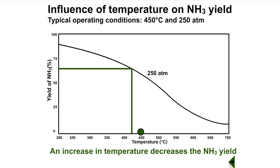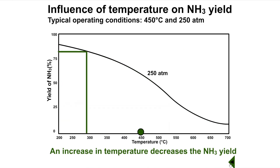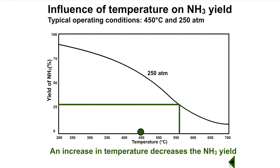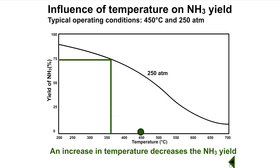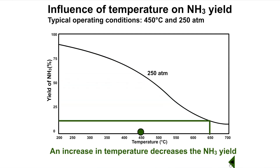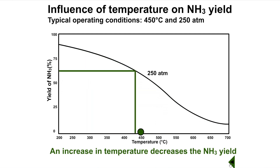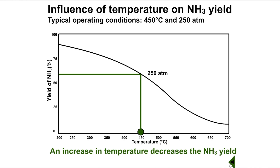In the Haber process, we want to get a high ammonia yield. We want the dynamic equilibrium which is reached to form as much ammonia product as possible. As temperature is increased, ammonia yield decreases. Consequently, we need to use a fairly low temperature. However, at a low temperature, it takes a very long time for equilibrium to be reached. Therefore, a compromise is made and a temperature of approximately 450 degrees Celsius is often used.